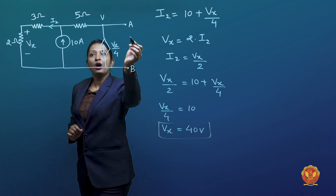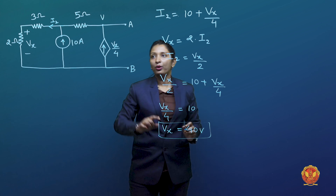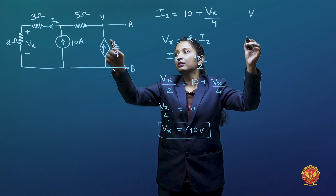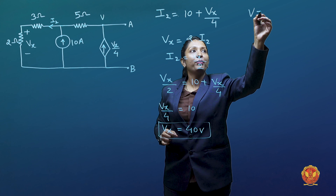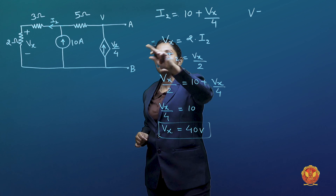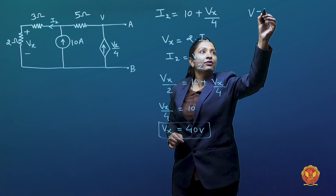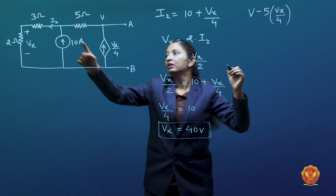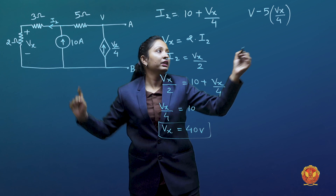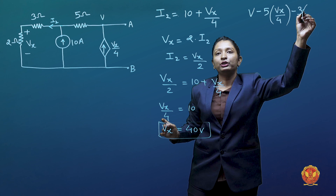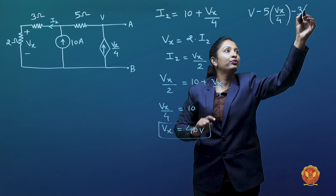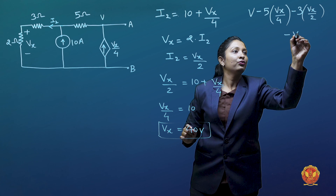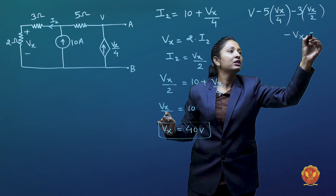Next we apply KVL in the outer loop. Starting from the terminal V, going around the loop: we encounter plus V, then minus 5 times the current Vx divided by 4 through that branch. Continuing around, we get minus 3 times I2, where I2 equals Vx divided by 2. Then minus Vx. The sum of these terms equals zero.